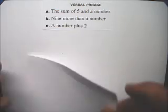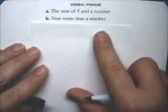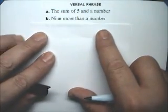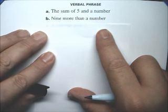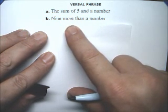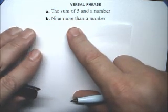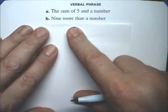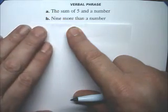Let's see, B part, 9 more than a number. Well, more is always plus, so 9 more is going to be plus 9. If you're 15 and your sister is 9 more than you, well, she's 24, because 15 plus 9 is 24.